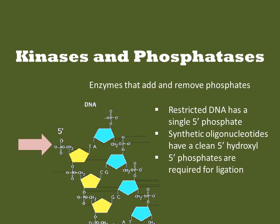Kinases and phosphatases add or remove the 5' phosphate, as indicated with the pink arrow. DNAs that are products of endonucleases have a single 5' phosphate, while synthetic oligonucleotides have a clean 5' hydroxyl. Molecular biology protocols often require ligase, which requires 5' phosphates. Sometimes it is useful to make a DNA available or not available for ligation in a reaction, and this phosphorylation state can be changed with kinases and phosphatases.